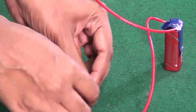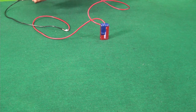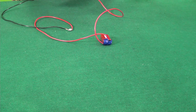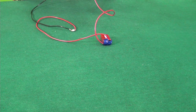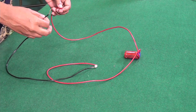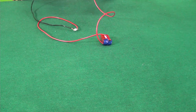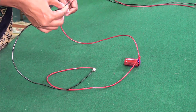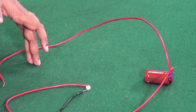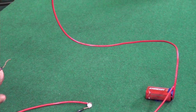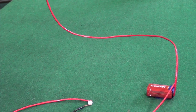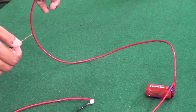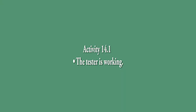Prior to attempting to answer whether liquids conduct electricity, let's check if our tester is working. We touch the two leads together, and the light glowing in the bulb means current is flowing in the circuit. When we open the circuit — that is, remove the two leads from touching each other — the light goes off, meaning there is no current. Our tester is working. This was Activity 14.1 outlined in the chapter.